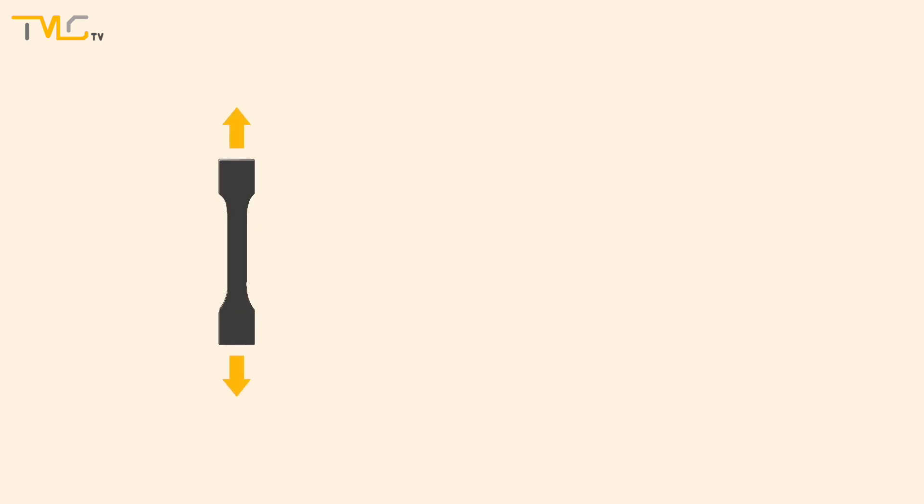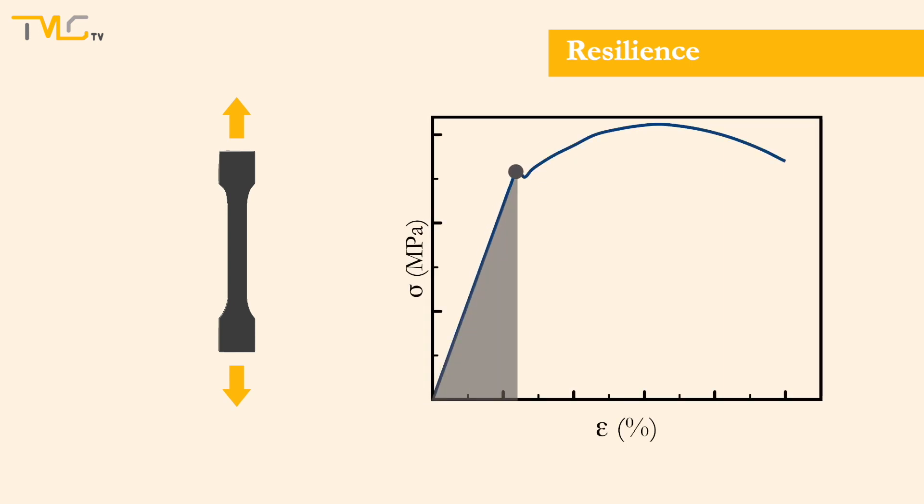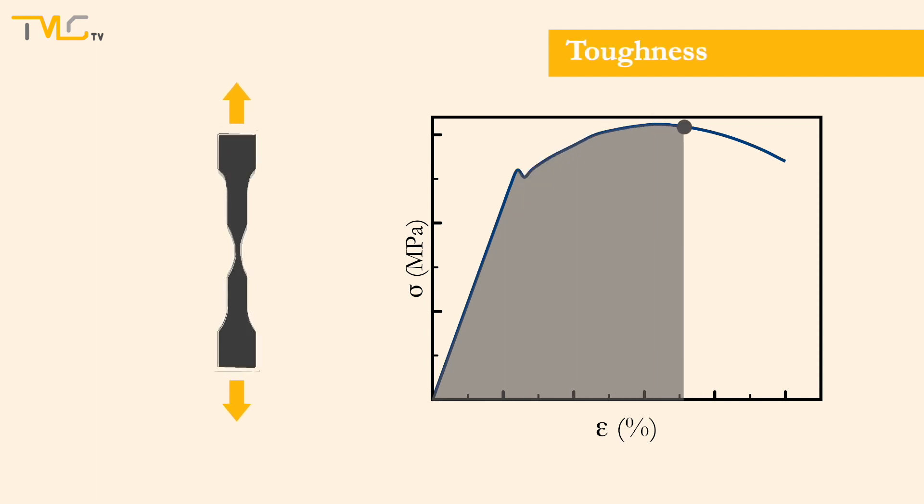As the materials are elongated under the tensile loading, they absorb or store energy. The energy absorbed during elastic deformation is called the resilience of a material and is equal to the area under the elastic region of the stress-strain curve. In addition to that, the energy stored from the beginning point until the material failure is called the toughness and is equal to the area under the stress-strain curve.